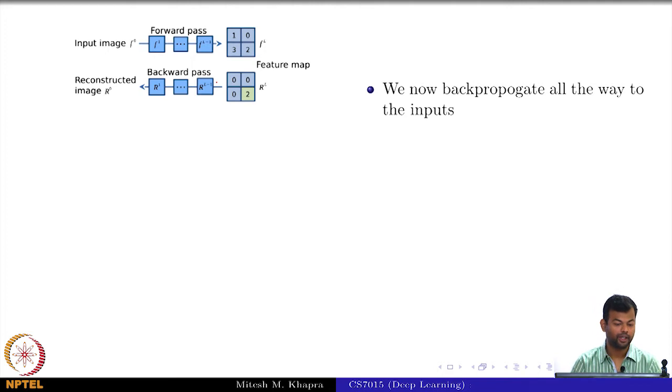We now backpropagate all the way back to the image. That means I will compute, if I call this as h2, then I will compute ∂h2/∂i1, i2, i3, and so on.